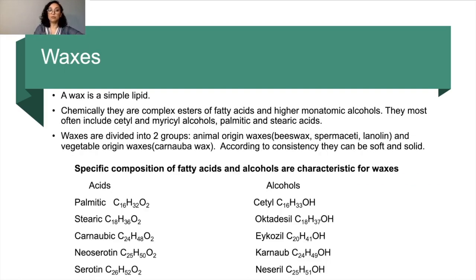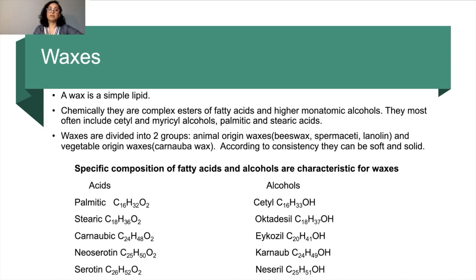A wax is a simple lipid. Chemically, they are complex esters of fatty acids and higher monoatomic alcohols. They most often include cetyl and myricyl alcohols, palmitic and stearic acids. Waxes are divided into two groups: animal origin waxes such as beeswax, spermaceti, and lanolin, and vegetable origin waxes such as carnauba wax. According to consistency, they can be soft or solid. Specific composition of fatty acids and alcohols characteristic for waxes includes palmitic, stearic, carnaubic and other acids, and acetyl, octadecyl, eicosyl, and other alcohols.